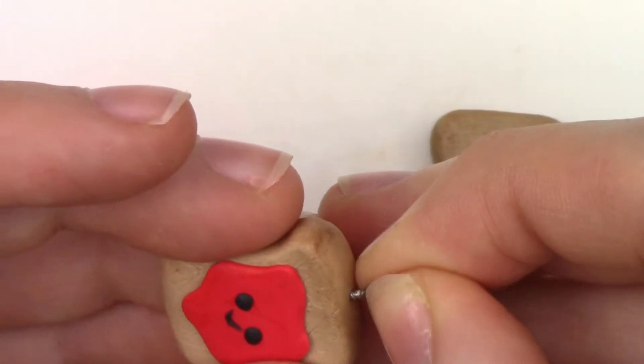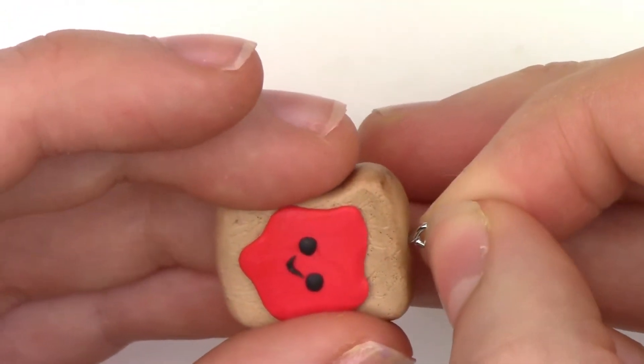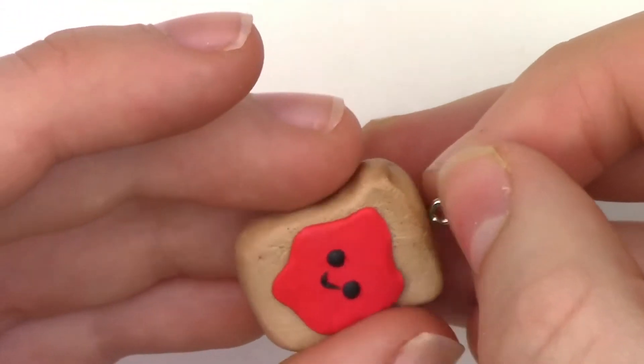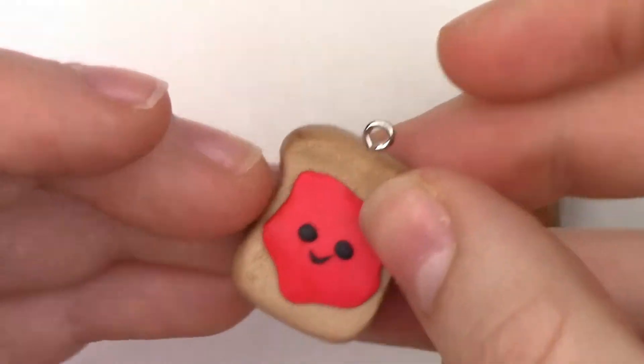Since I want these two to be charms, I'm taking two small eye pins that you can find at any craft store and pressing them gently onto the top of my charm.